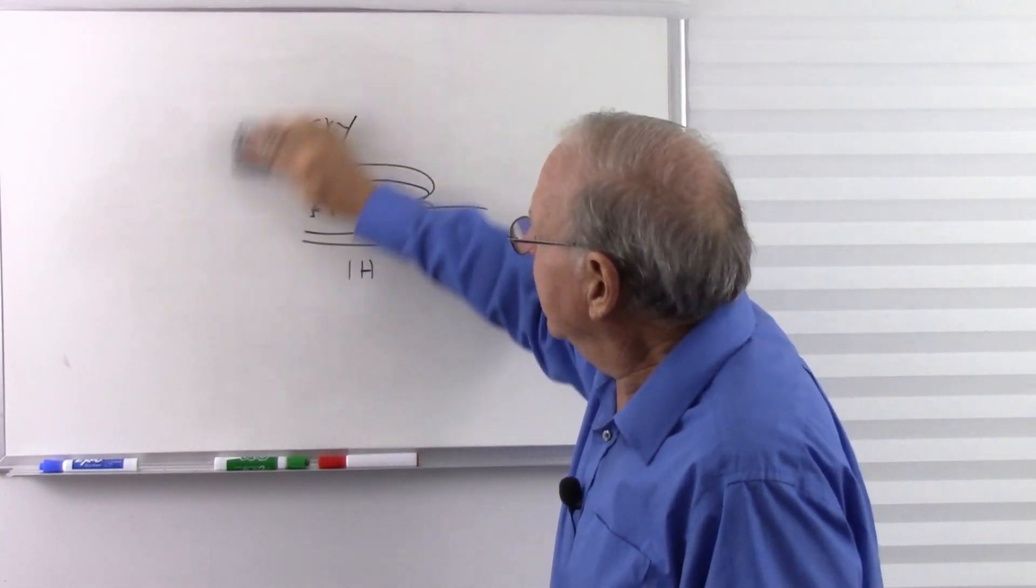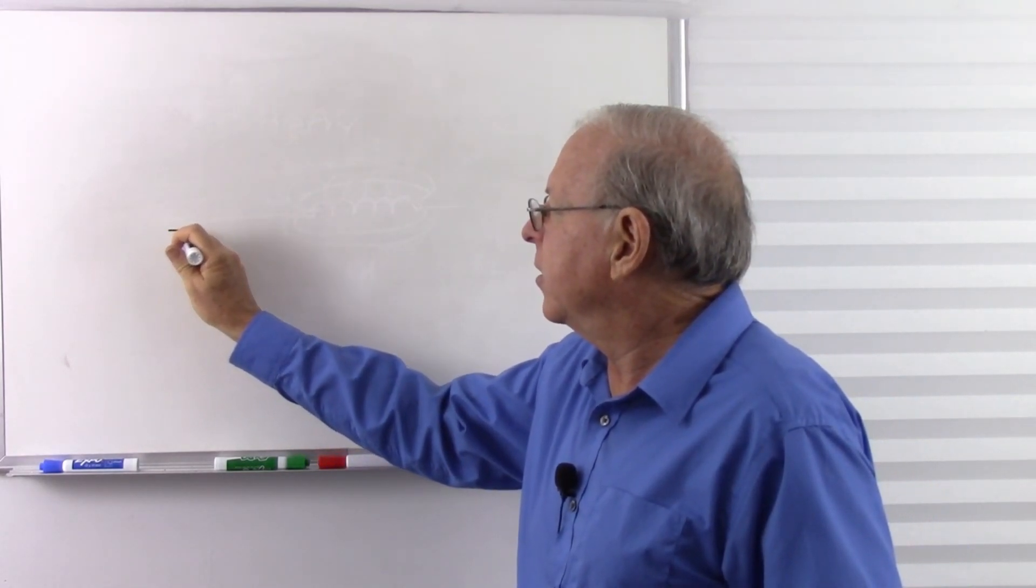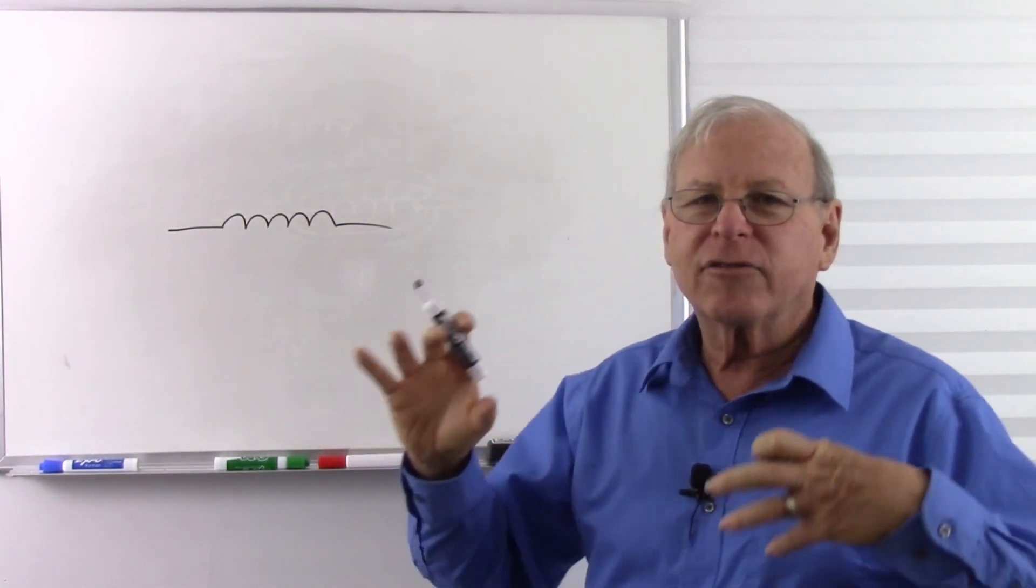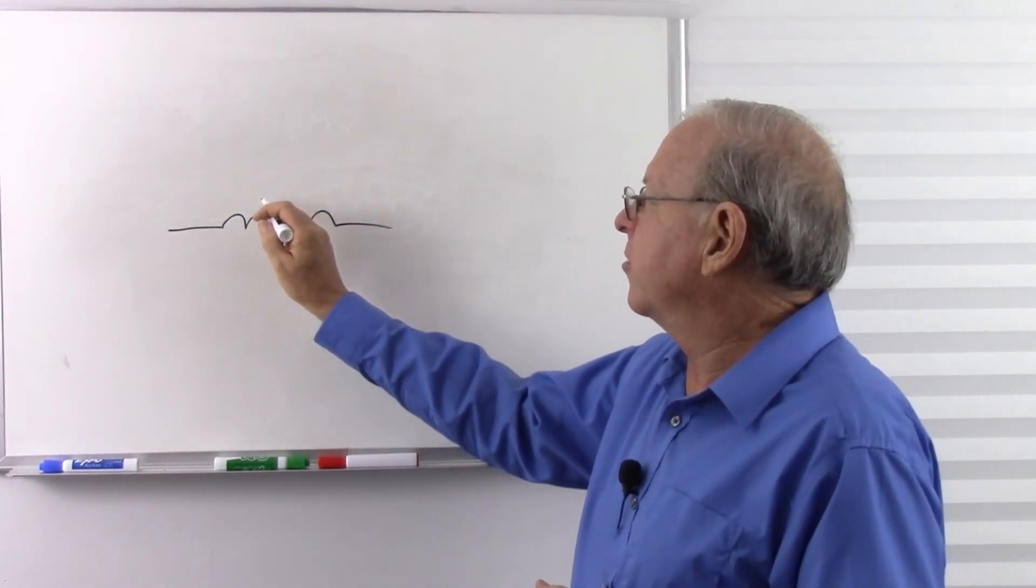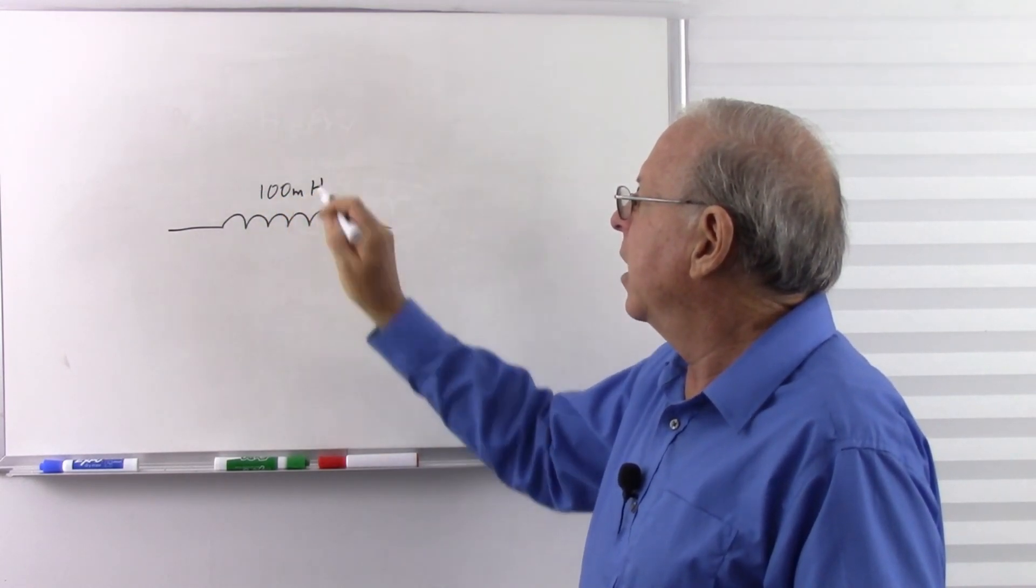Now what affects the amount of inductance we have? Well, let's say we have an inductor. I just draw five turns of wire and put them this far apart. And let's say this particular inductor happens to have one-tenth of a Henry or 100 millihenrys of inductance.